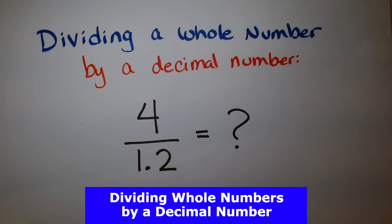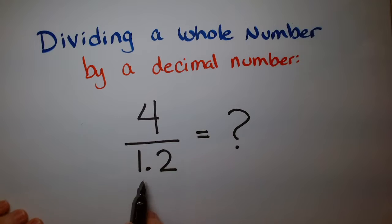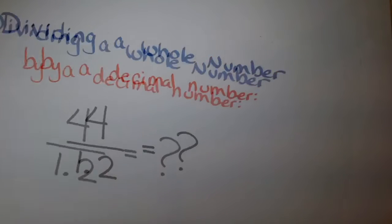Let's learn how to divide a whole number by a decimal number. In this case, the denominator is a decimal, so we want to multiply whatever we need to make this a whole number.